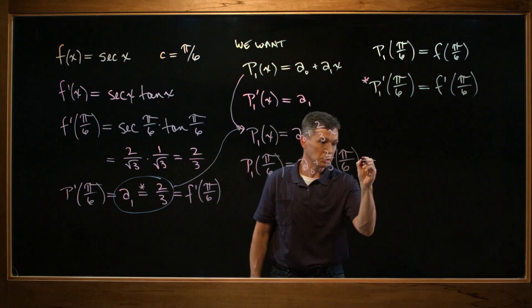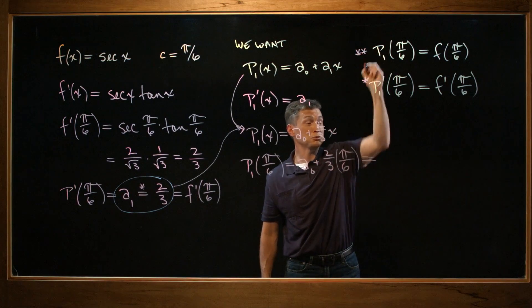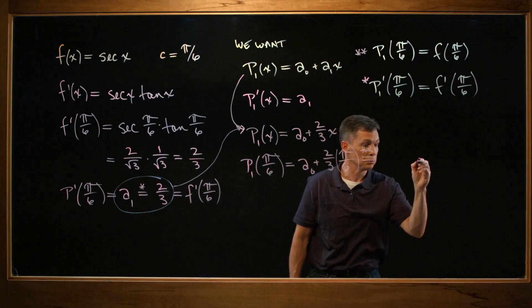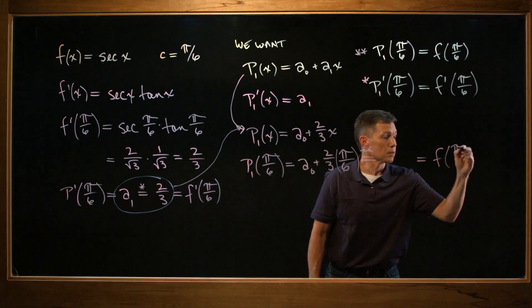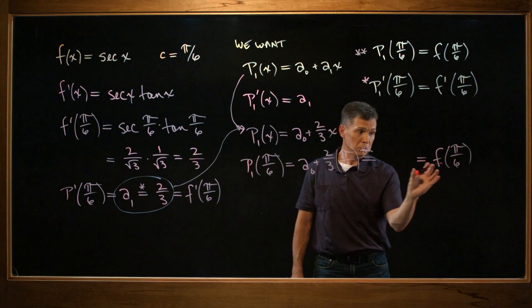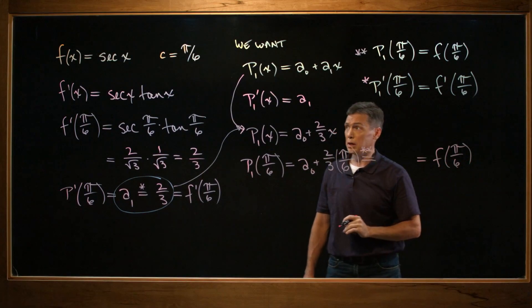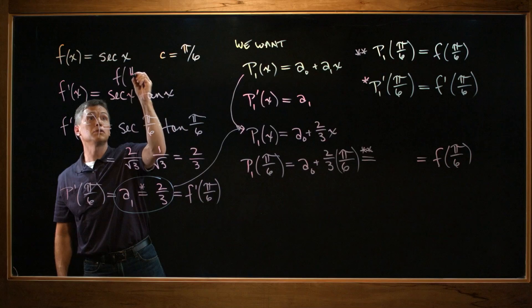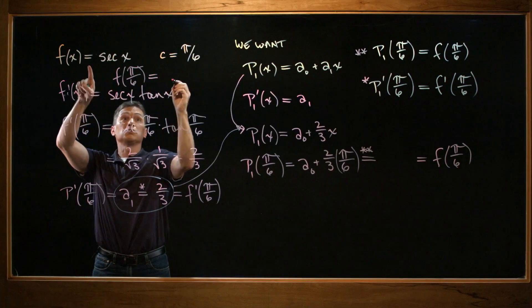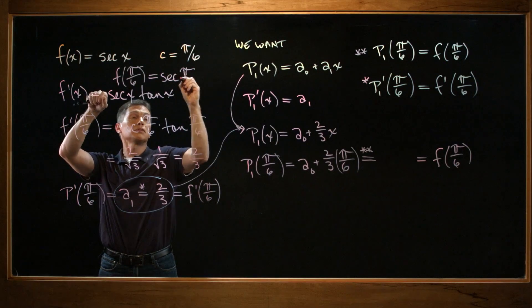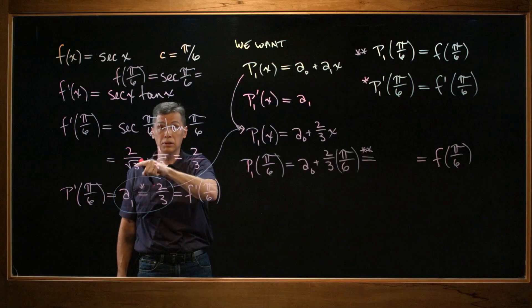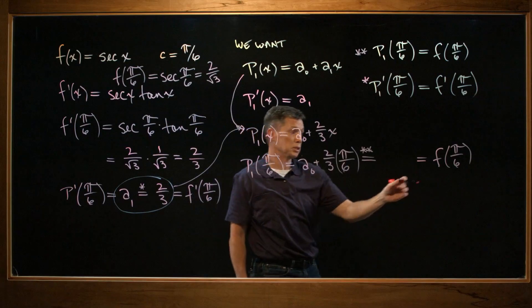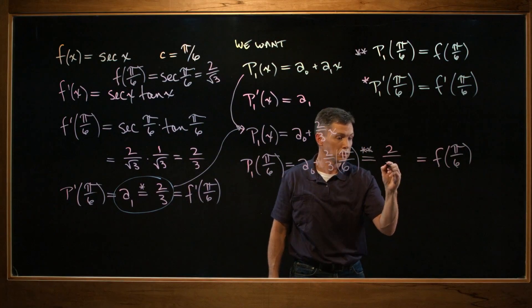And that's supposed to equal, from here, that's supposed to equal f(π/6). Let me skip a space. Because the space I'm going to skip is, let's just go ahead and evaluate f(π/6). So f(π/6) comes from our original f function. I'll even squeeze it in here if you want. f(π/6) equals secant(π/6). And π/6, secant of π/6, I think we did that once. That's 2/√3. Point is, back over here, f(π/6) is 2/√3.